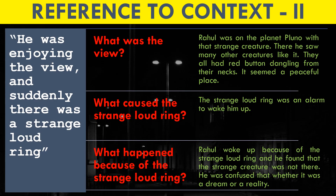Next question: What was the view Rahul was enjoying? Answer: Rahul was on the planet Pluno with the strange creature. There he saw many other creatures like it. They all had red buttons dangling from their necks and it seemed a peaceful place. Next: What caused the strange loud ring? Answer: It was an alarm clock to wake him up. What happened because of it? Rahul woke up and found the creature was not there. He was confused whether it was a dream or reality.